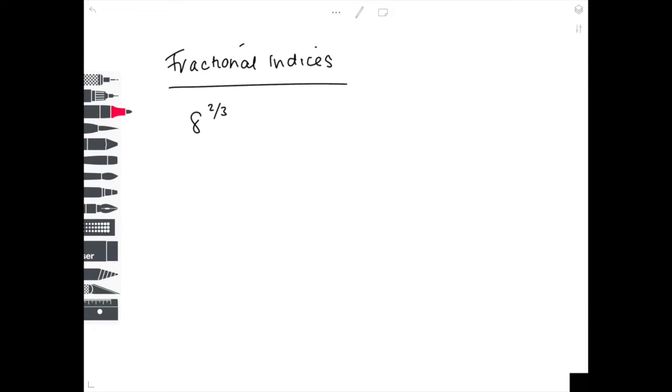So the first thing you want to do is sort out this denominator here. Because it's the 3, it's telling you to cube root. So we need to cube root, and 8 cube root is 2 because 2 times 2 times 2 is 8, which is why I'm putting a 2 there.